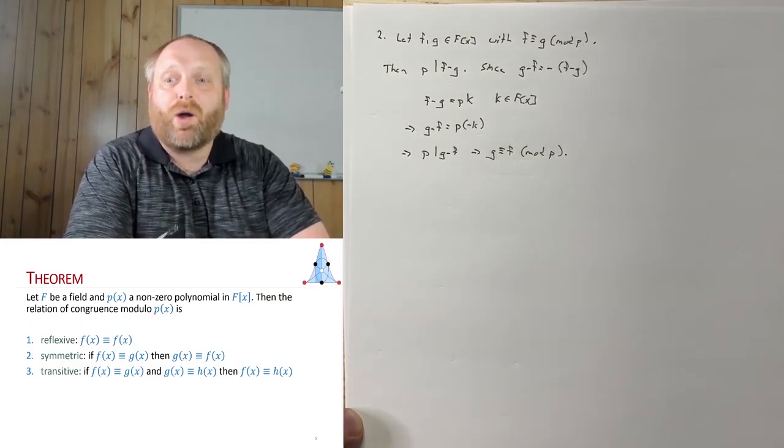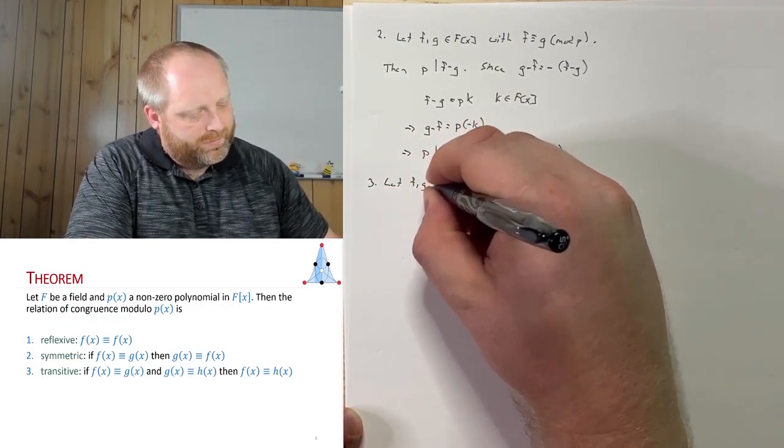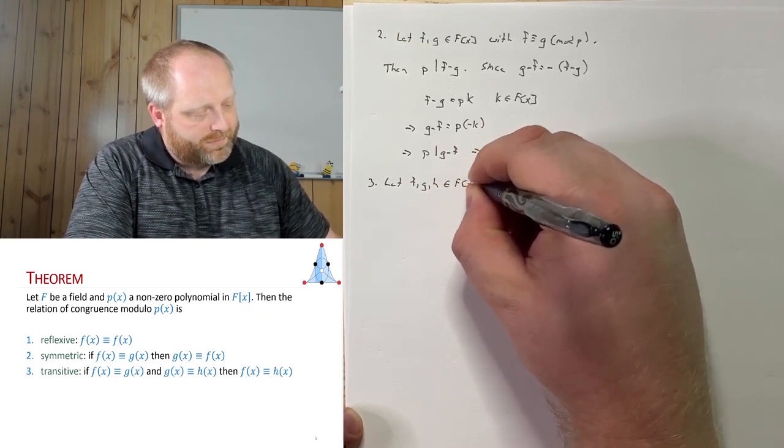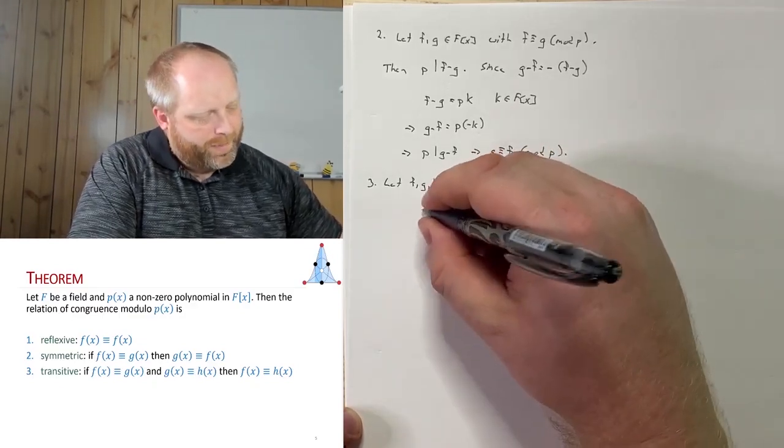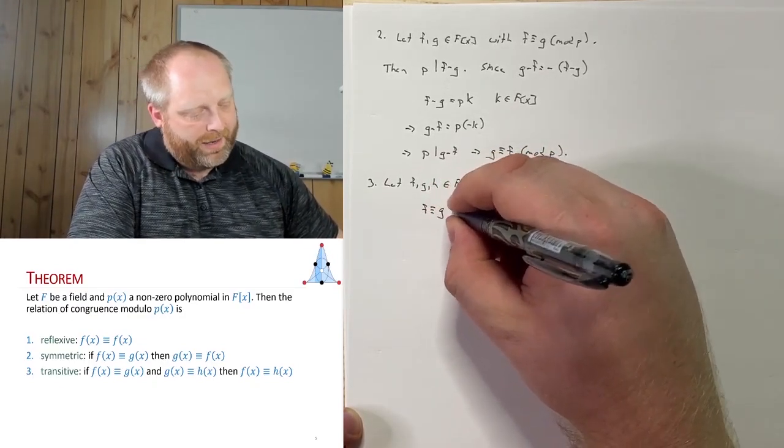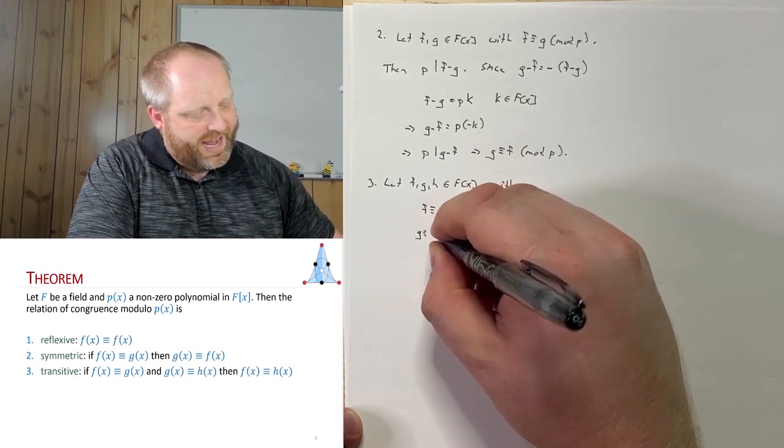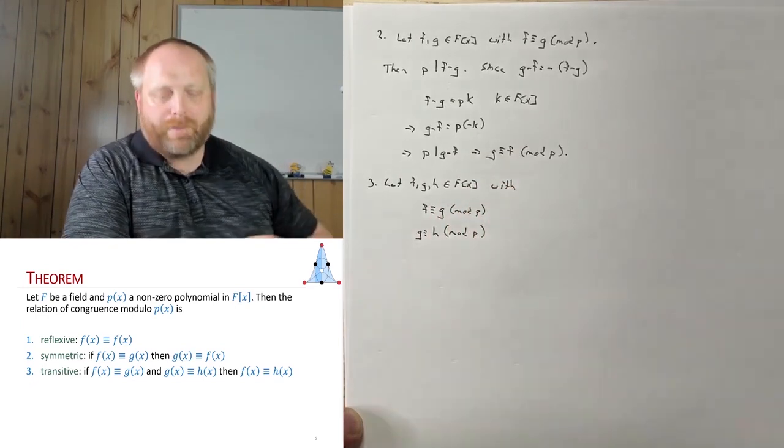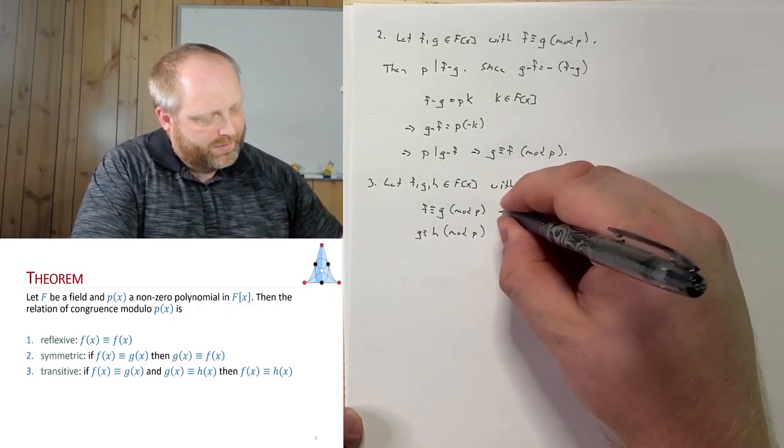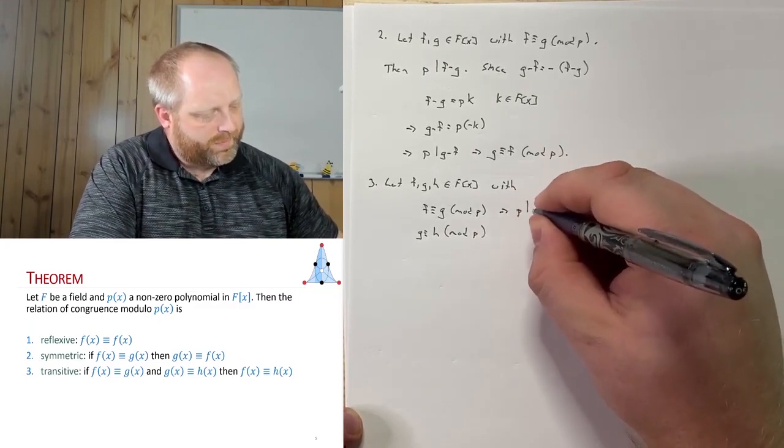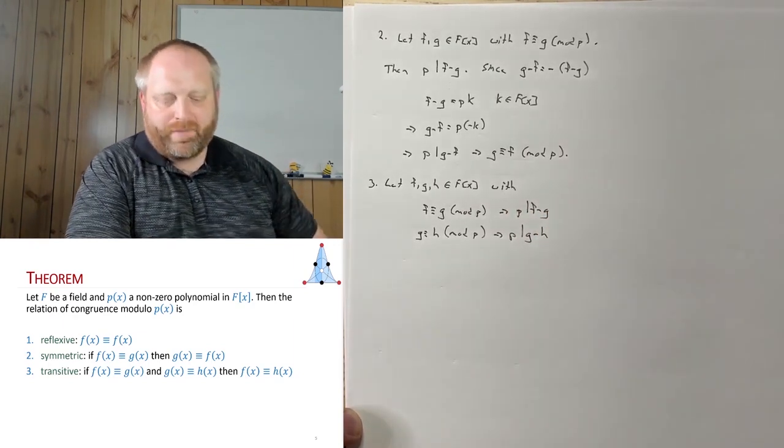The last is what we have is the transitive property. So here we have three polynomials. So let's let f, g, and h be elements of F[x]. Now, of course, we have with the following property that f is equivalent to g mod p, and g is equivalent to h mod p. Now, of course, from this, we also get that p divides f minus g, and we also get that p divides g minus h.